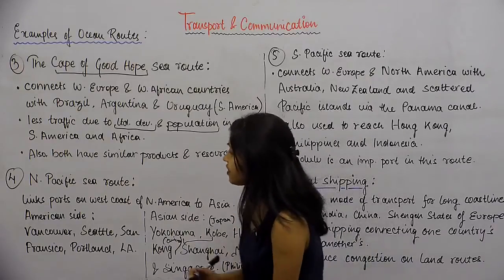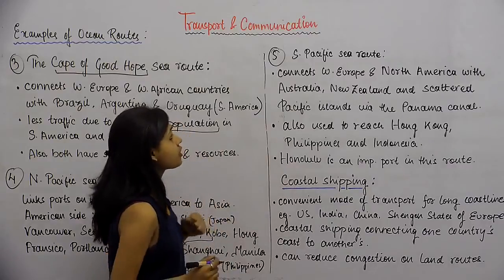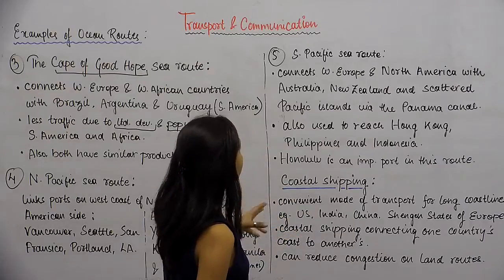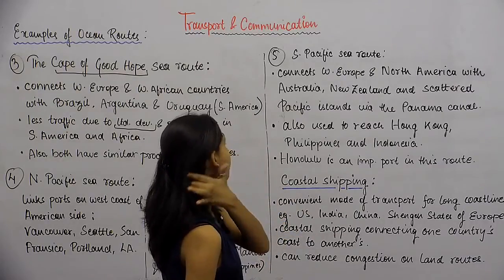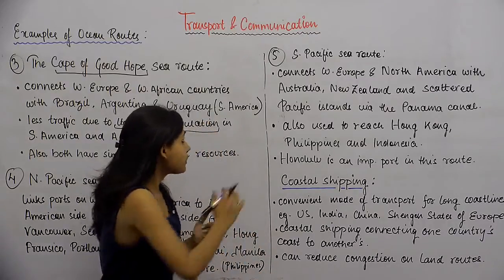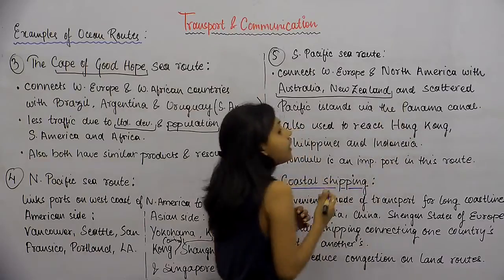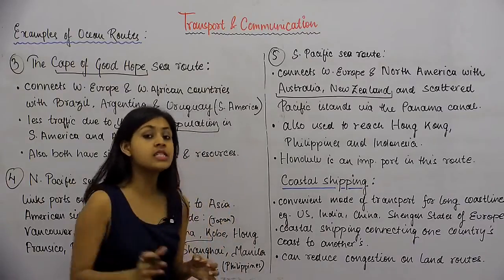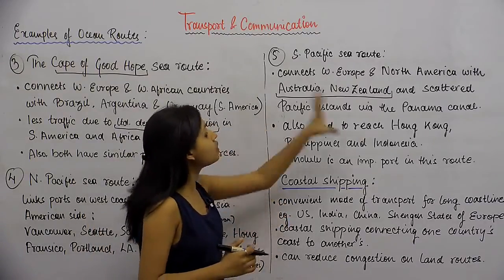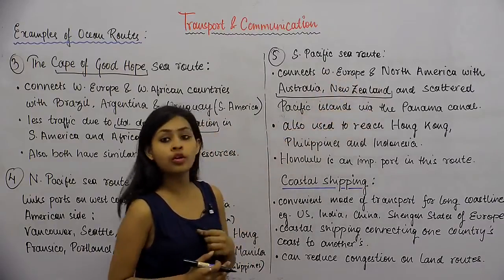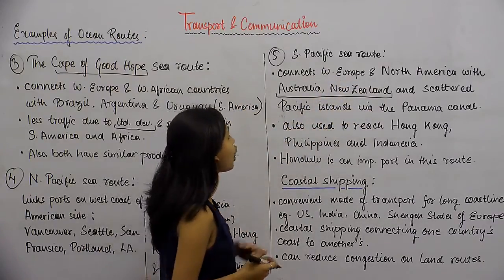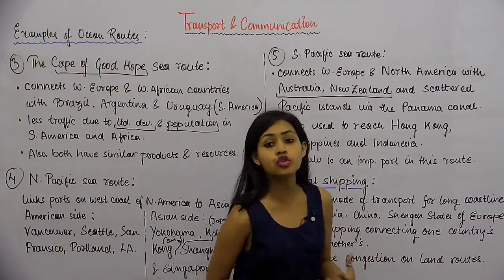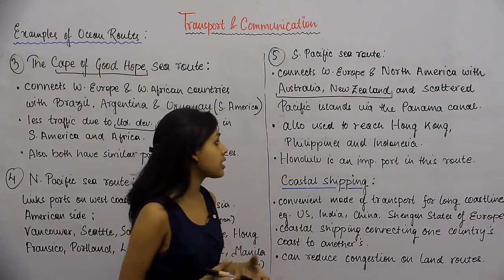The South Pacific sea route connects West Europe and North America with Australia, New Zealand, and scattered Pacific islands via the Panama Canal. Australia, New Zealand, etc. lie on the southern side, so for connection to these areas with Western Europe and North America, we have the South Pacific sea route. It also links with scattered Pacific islands via the Panama Canal, which is something we will study in detail later.